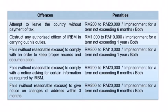The second-last offense is failure without reasonable excuse to comply with a request for certain information as required — they have to pay penalties of RM200 to RM20,000 or imprisonment for a term not exceeding 6 months, or both. They face the same penalty for failure without reasonable excuse to give notice of change of address within 3 months. The court is empowered to enforce the charges of offenses only by a practitioner essentially.